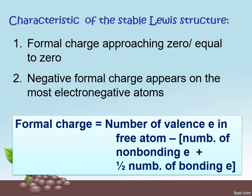The characteristics of a stable Lewis structure is formal charge approaching zero or equal to zero and the negative formal charge appears on the most electronegative atoms.